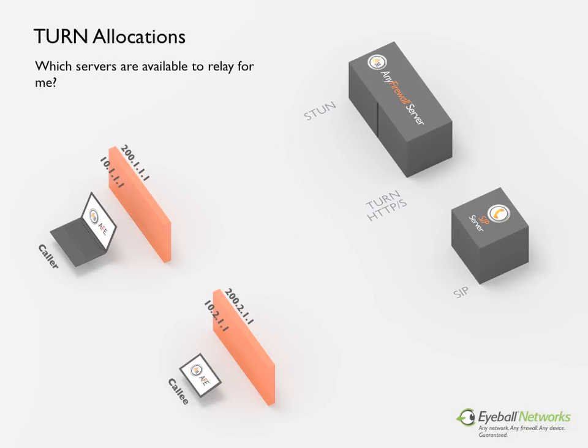Traversal Using Relays Around NAT, or TURN, is a protocol that allows an application such as Eyeball Messenger behind a NAT or firewall to receive incoming data over TCP or UDP connections via relay from an external server. It is most useful for applications behind symmetric NATs or firewalls — typically enterprise firewalls — that wish to be on the receiving end of a connection to a single peer such as another Messenger or VoIP client application. TURN accomplishes this by using a server, in this case AFS, to act as a middleman or relay point for signaling and media.